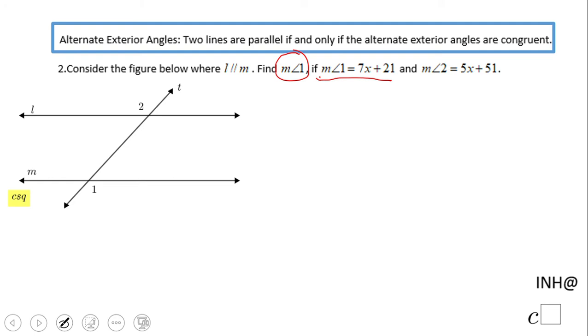What do we notice about these two angles? We notice that these two angles are what we call alternate exterior angles. If you notice,